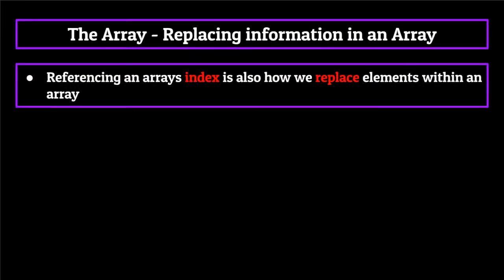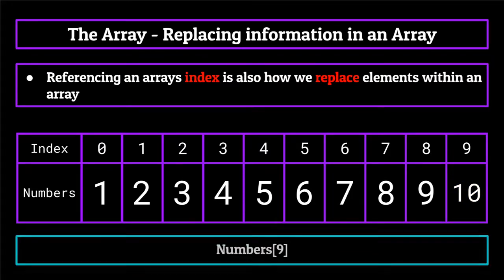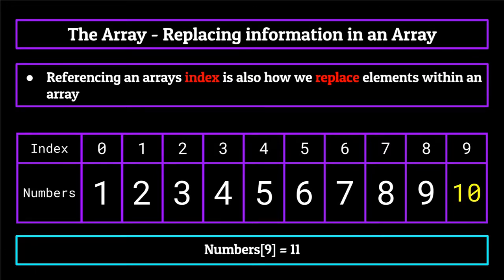Referencing an array's index number is how we also replace elements within the array. Continuing with our numbers array, let's say we wanted to change the last element — the integer 10 — to be the integer 11 instead. What we would do is reference the ninth index of the numbers array, the one which currently contains the integer 10, and set it equal to 11. This tells the computer to take the element at index nine and replace it with the integer 11, essentially swapping 10 for 11.